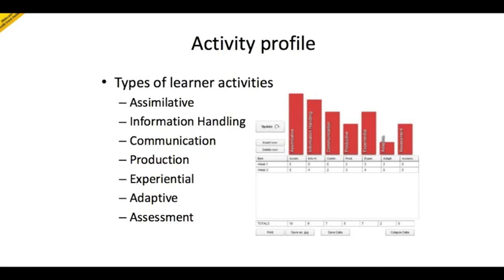The third conceptual view is the activity profile, and this enables you to map the nature and amount of time that students will be spending on different kinds of activities. Assimilative activities are things like reading, listening, viewing. Information handling might be manipulating data in a spreadsheet. Communication might be in a forum. Production involves creating something such as an architectural model or a new chemical compound. Experiential refers to drill and practice or applying in a work-based context. Adaptive is quite a specialised type — things like modelling and simulation, important in science courses, such as students working on a simulated pendulum and altering variables to see the effect on the swing. Finally there's the amount of time spent on assessment activities. The activity profile widget is available via the Cloudworks site.